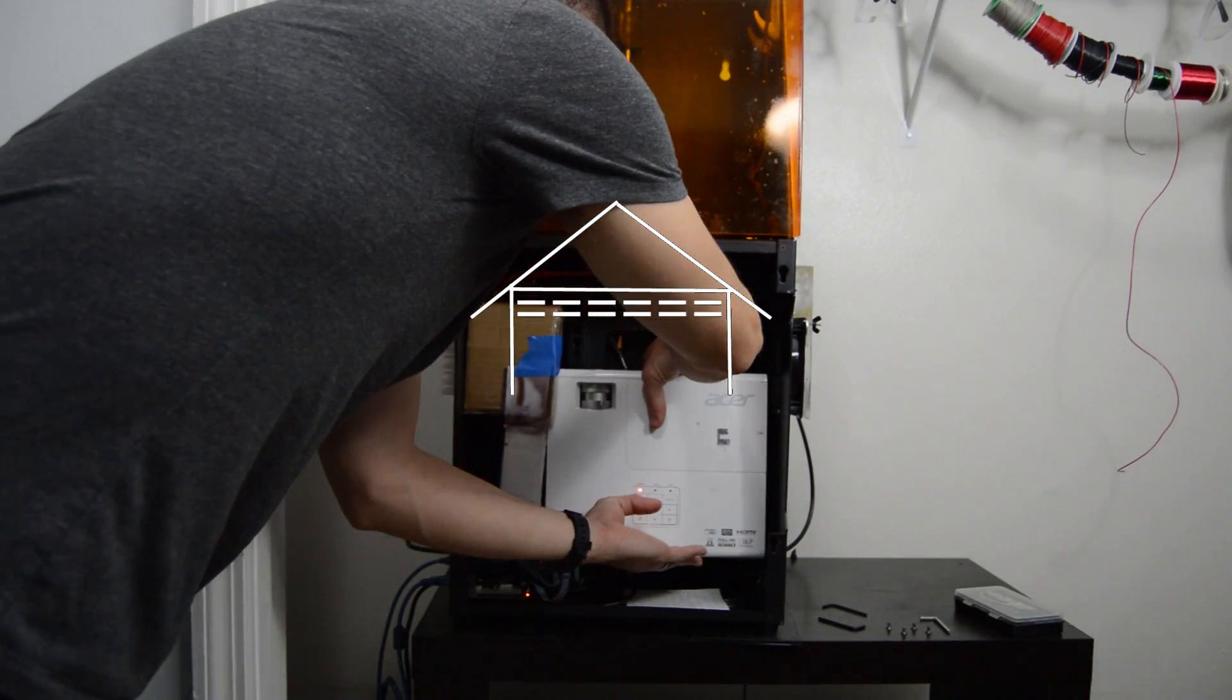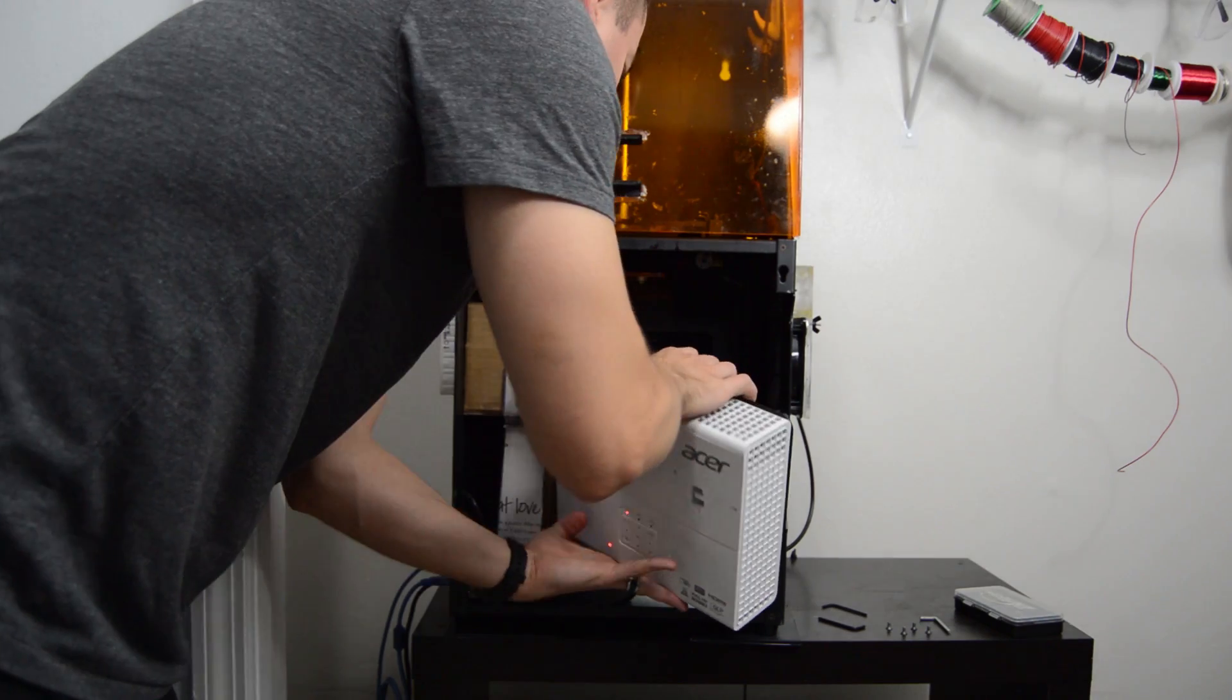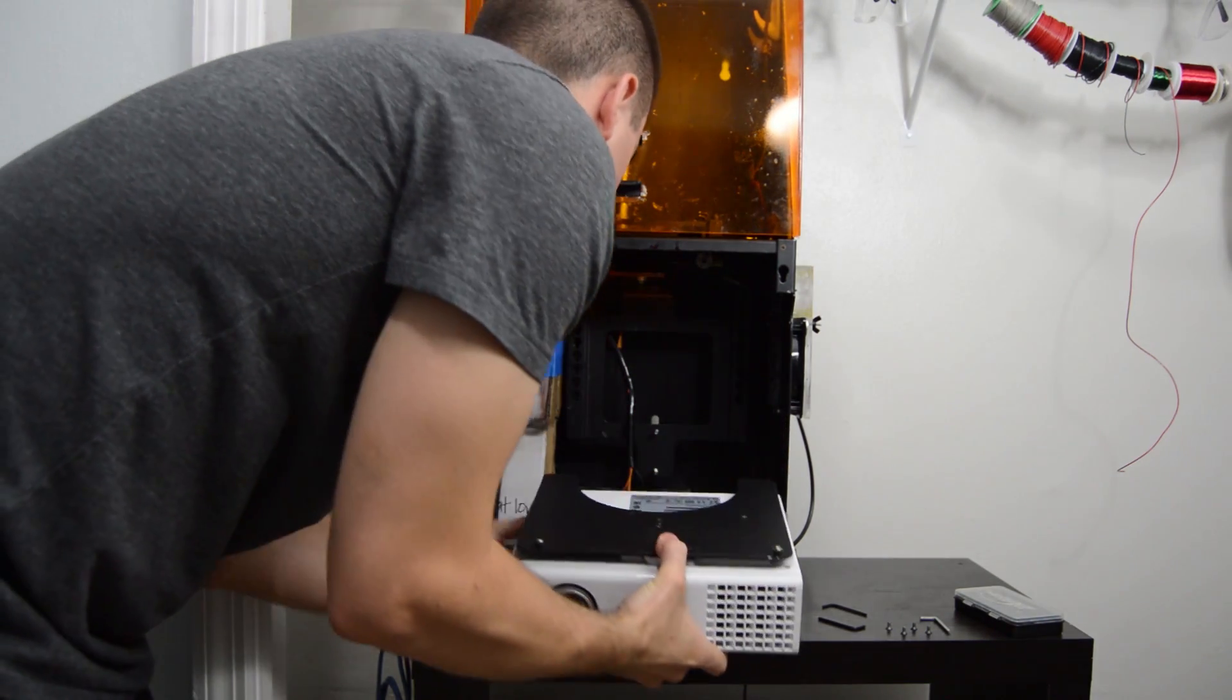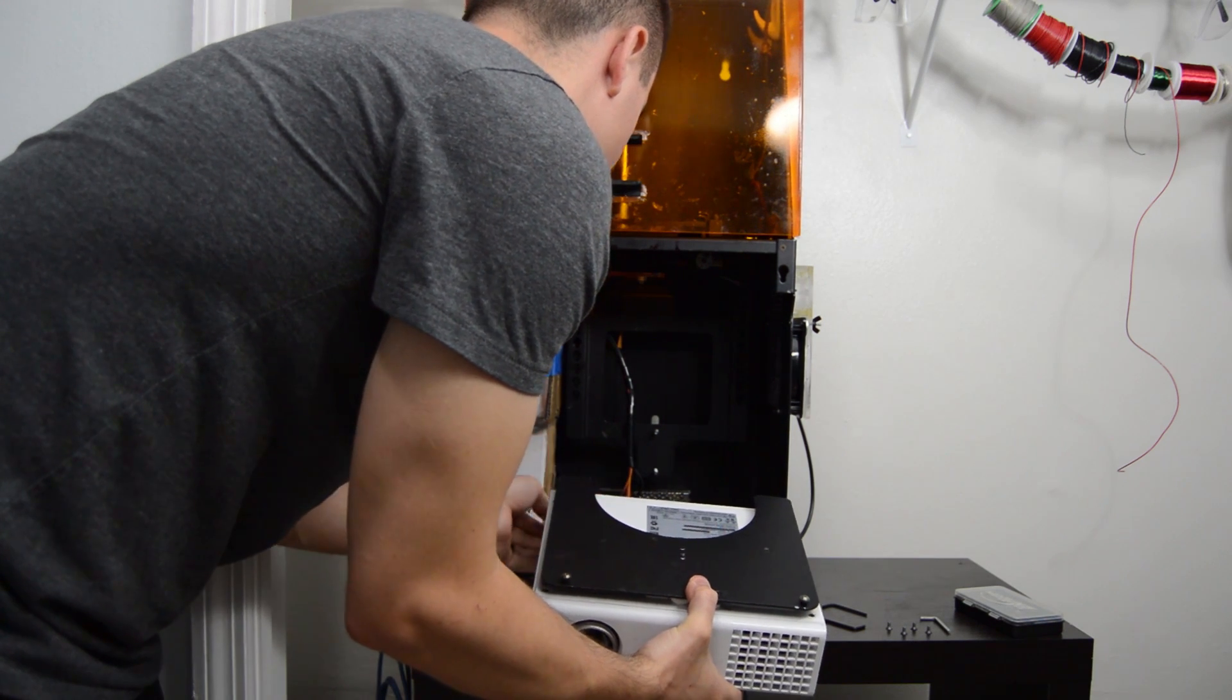Welcome back to another episode of Garage Science. This is going to be a follow-up video to the last one I did where I showed you how to remove the infrared and ultraviolet light blocking filter on the front of the halogen lamp inside your DLP projector.